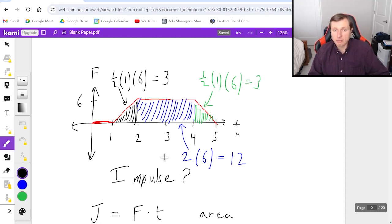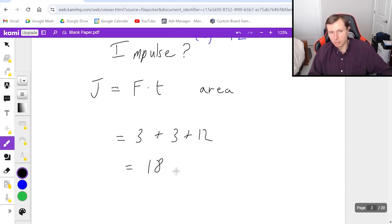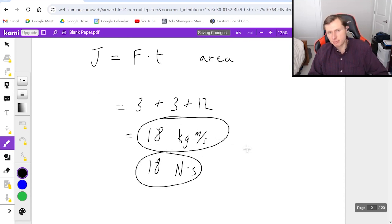So then if I want my final answer for the total impulse, I just got to add these three answers together. Three plus three plus 12 is going to give me 18. And the units for impulse, there are two answers you could give. One is the kilogram meter per second, or you can give units of newtons times seconds. Both of these are correct. And that's it for the first one.